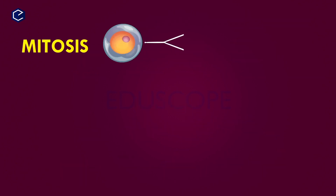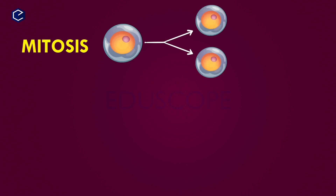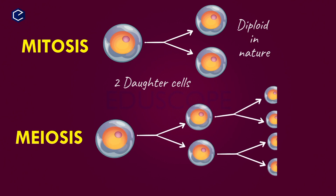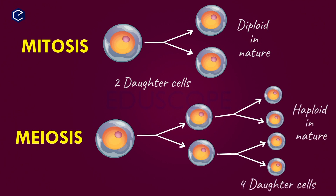In mitosis, one parent cell produces two daughter cells. In meiosis, after meiosis II, four daughter cells are formed. The parent cell has two sets of chromosomes, while each daughter cell has only one set of chromosomes — they are haploid.